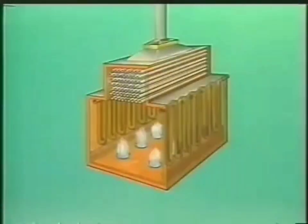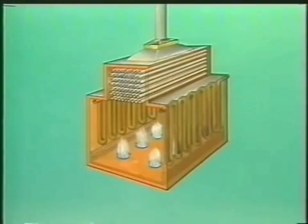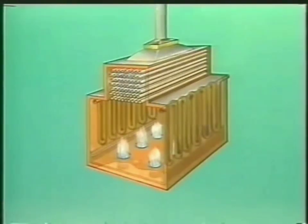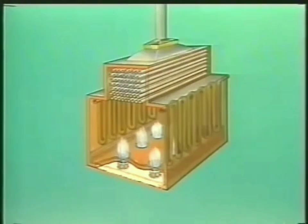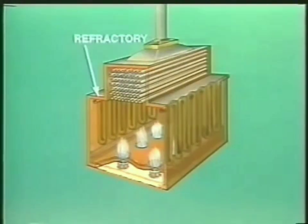This type of furnace is shaped like a house and is called an A-frame or cabin furnace. The inner walls of the furnace are lined with a material that reduces heat losses and reflects heat back onto the tubes. This material is called a refractory lining.